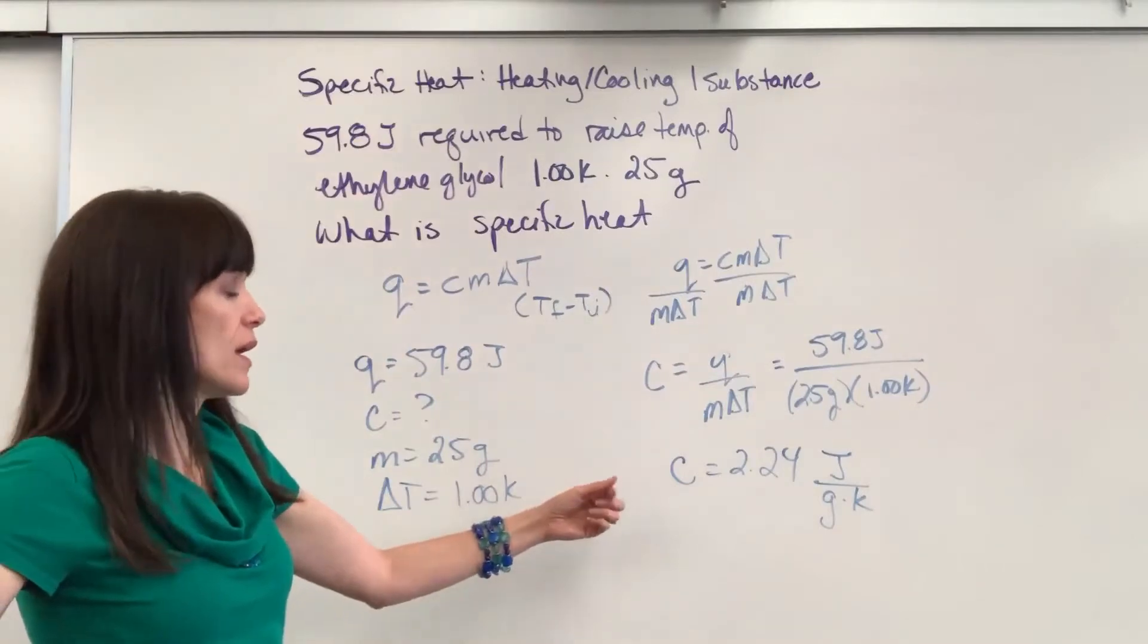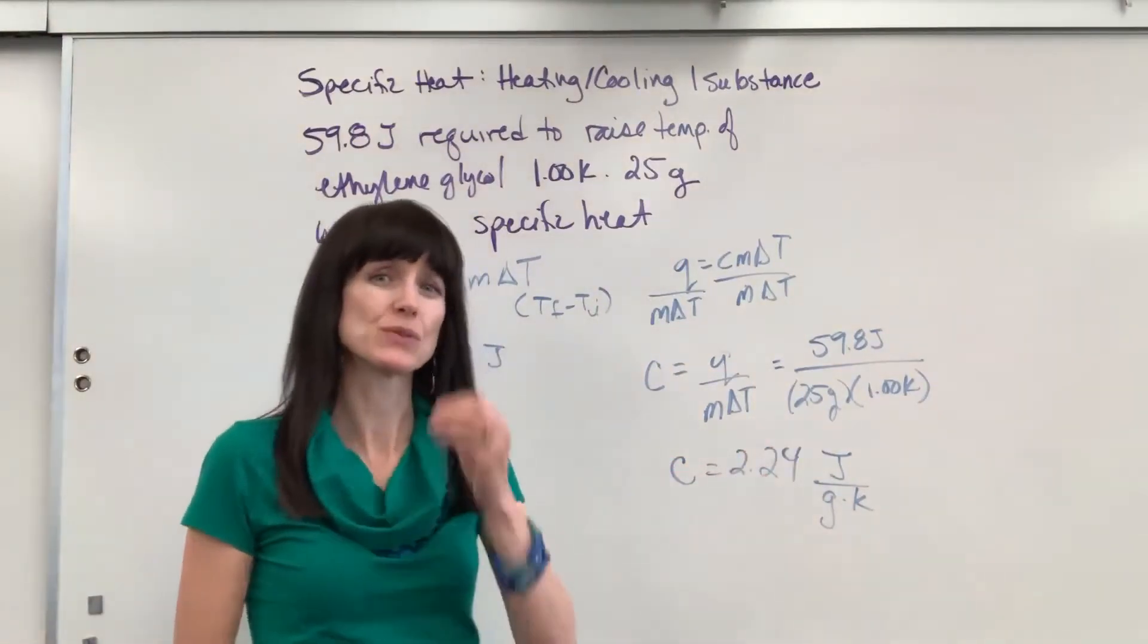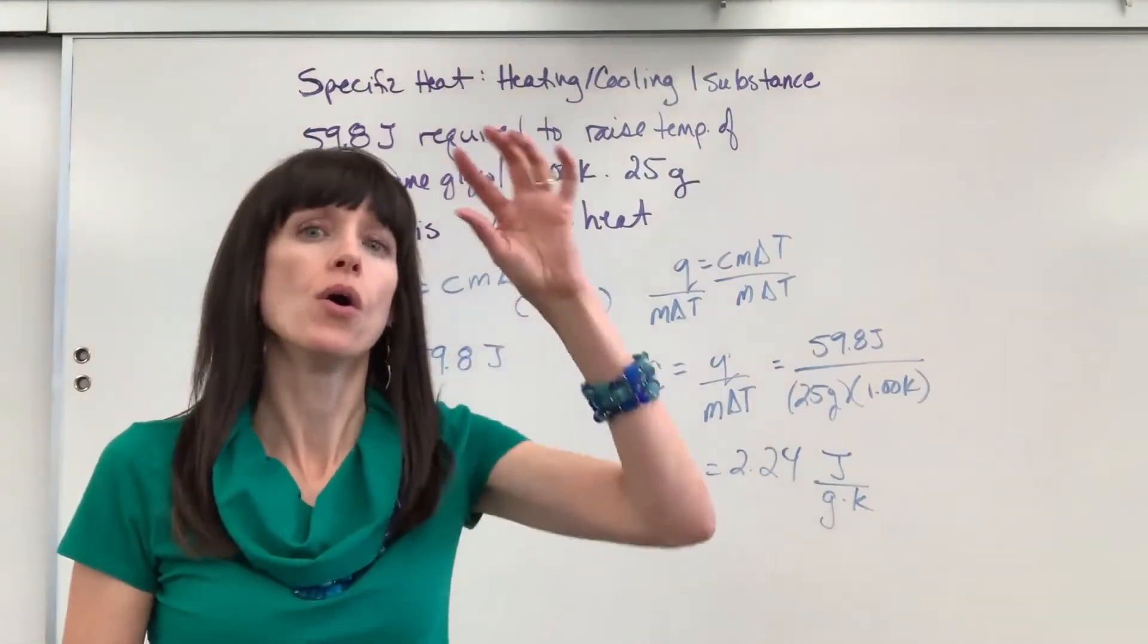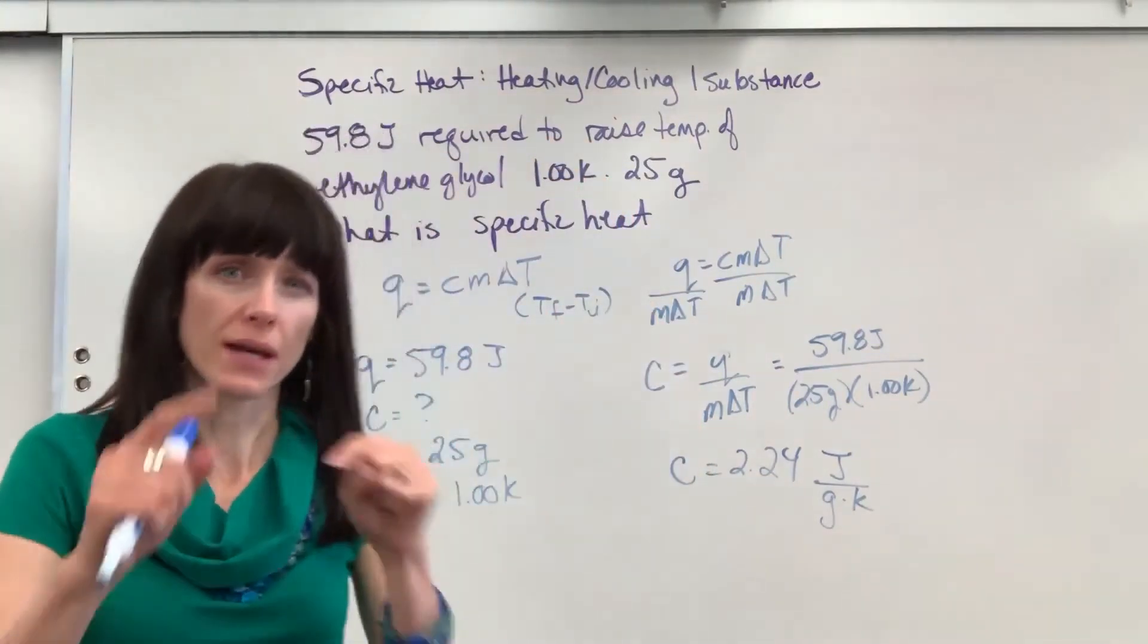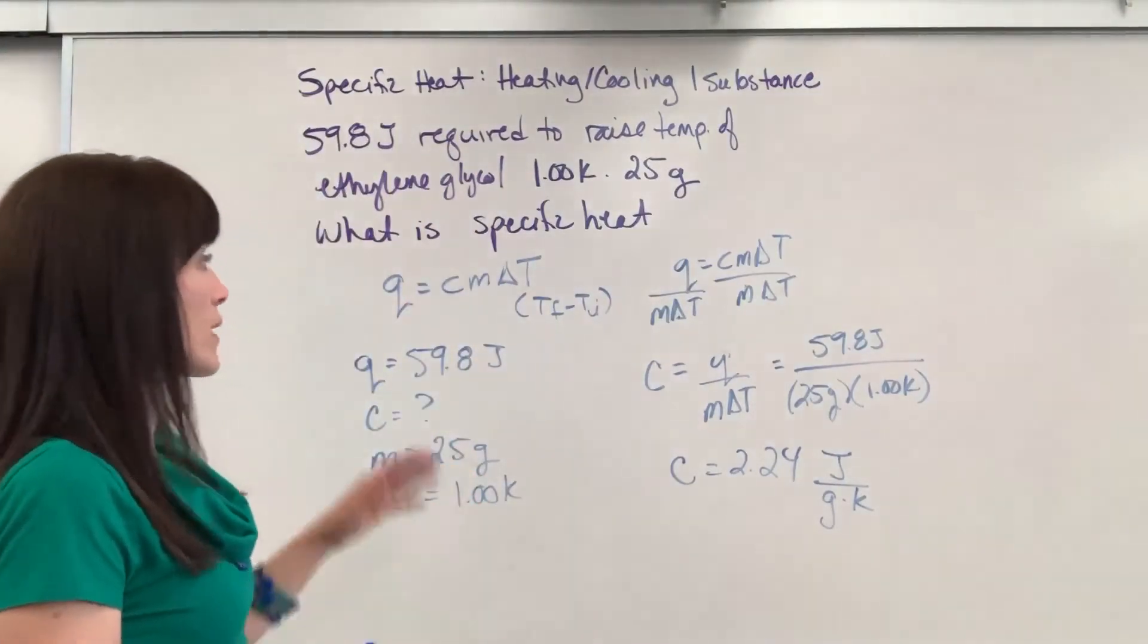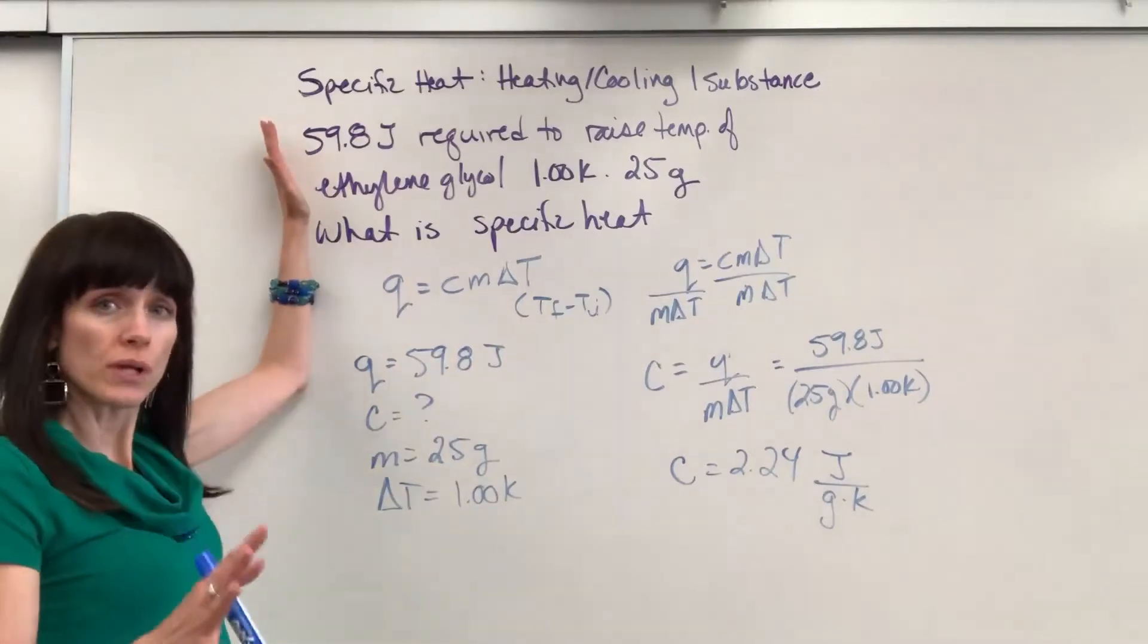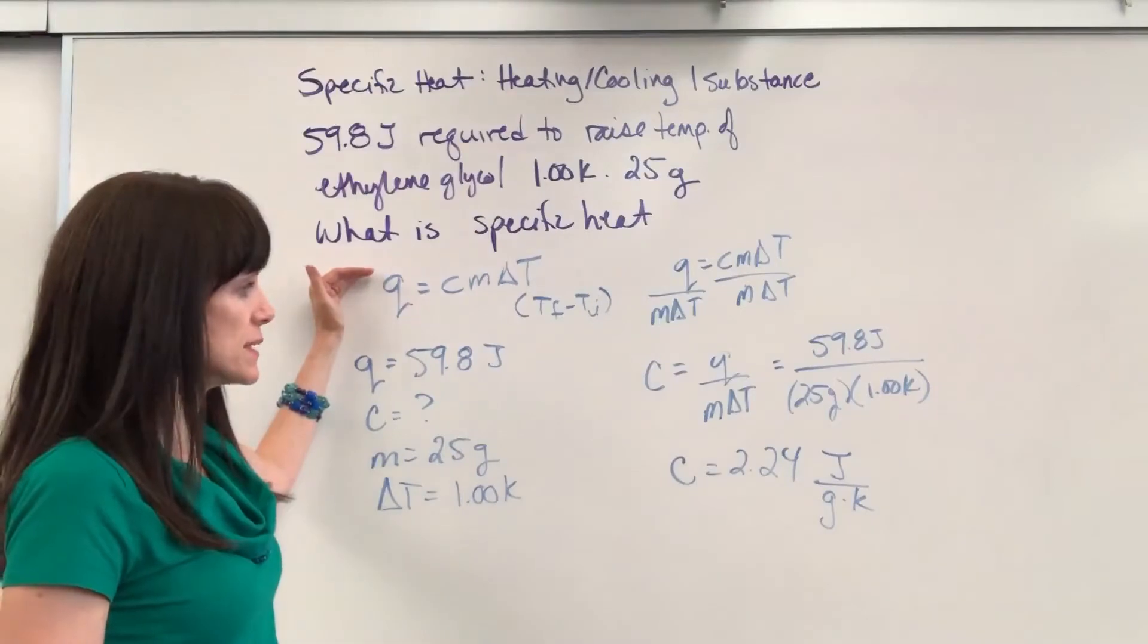So what does that mean? That means ethylene glycol requires 2.24 joules to raise one gram of ethylene glycol one kelvin. We could also say one degree C because they change at the same magnitude. If you are cooling or warming a substance, here's where you go: Q equals CM delta T.